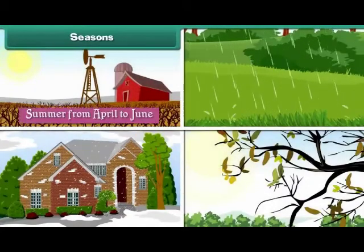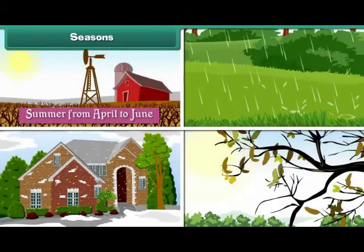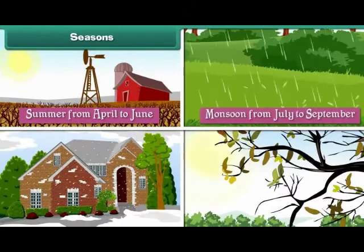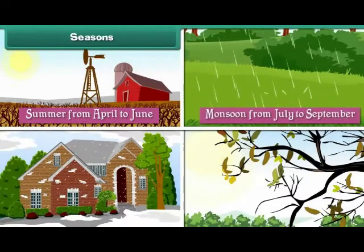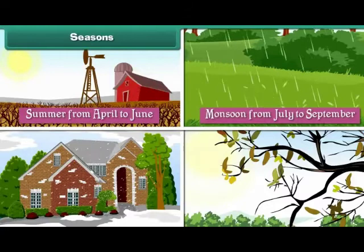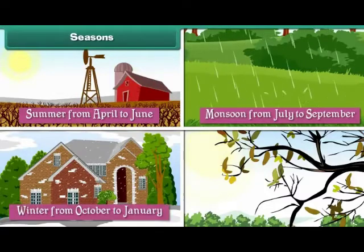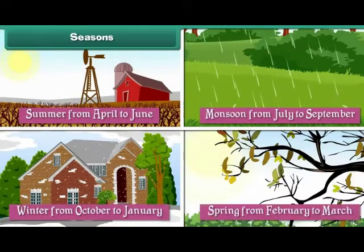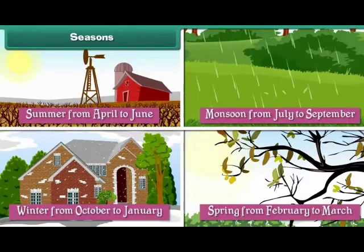They are: summer from April to June, monsoon from July to September, winter from October to January, and spring from February to March.